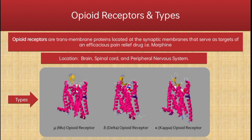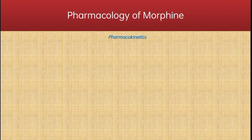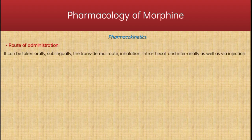Let us study the pharmacokinetics of morphine. Firstly, the route of administration: morphine can be taken orally, sublingually, transdermally, by inhalation, intrathecally, intra-anally, as well as via injections.